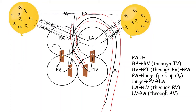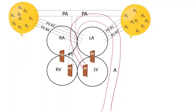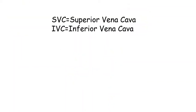At this point blood is in the aorta. We need to add two new roads that lead to the right atrium: our first road, which we can label SVC, and our second road, which we'll label IVC. SVC and IVC stand for the superior vena cava and the inferior vena cava.